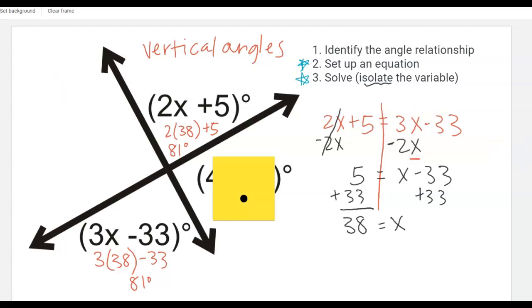So anytime I have vertical angles I am going to set them equal to each other. That's not how every single problem in the scavenger hunt is going to be solved but definitely with our vertical angles or any other angles that are congruent.